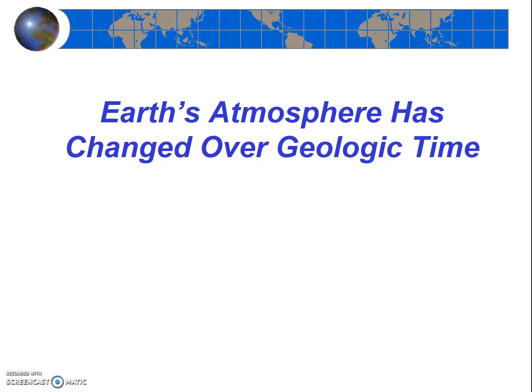Generally, these changes happen very slowly over geologic time. But sometimes, as in the case of huge volcanic eruptions, the change can happen more quickly. Notably, if we look at the geologic record, quick changes in our atmosphere have often resulted in mass extinctions. This is disconcerting when you consider that humans are currently changing atmospheric CO2 concentrations at a fairly fast rate. Are we causing another mass extinction? Ecologists tell us yes, we likely are. We'll be studying climate change later in the course.